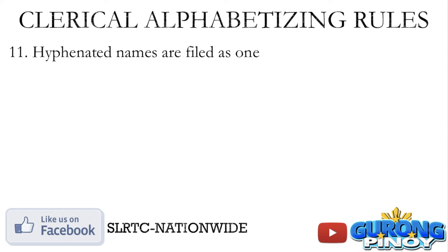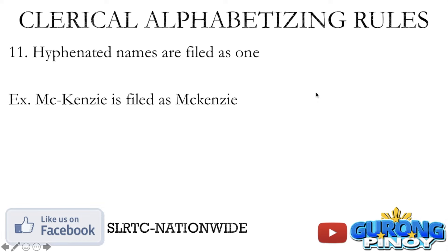Rule number eleven: hyphenated names are filed as one. When you say hyphen, these are the dash. So ang mga pangalang may dash are filed as one. For example, Mac-Kenzie is just filed as Mackenzie — nawawala po yung dash, iniignore yung dash.